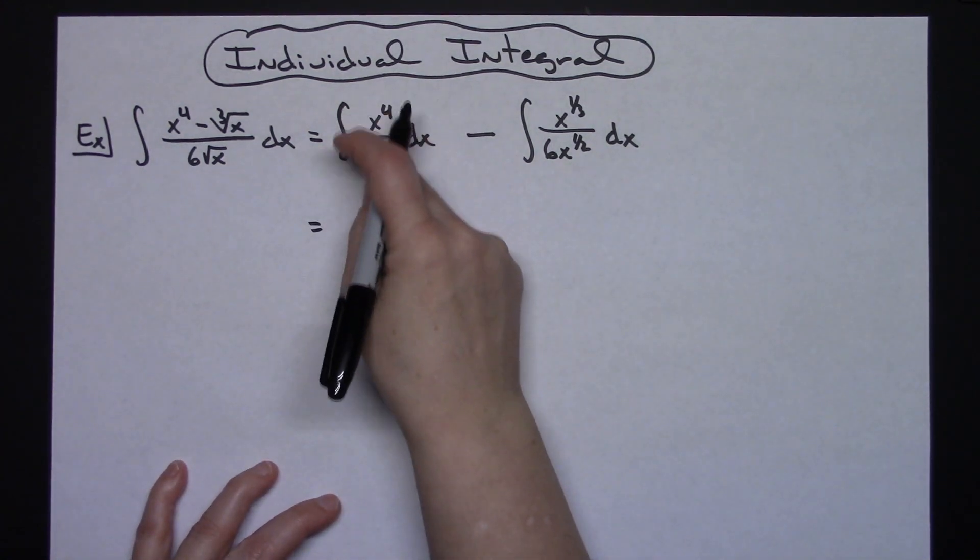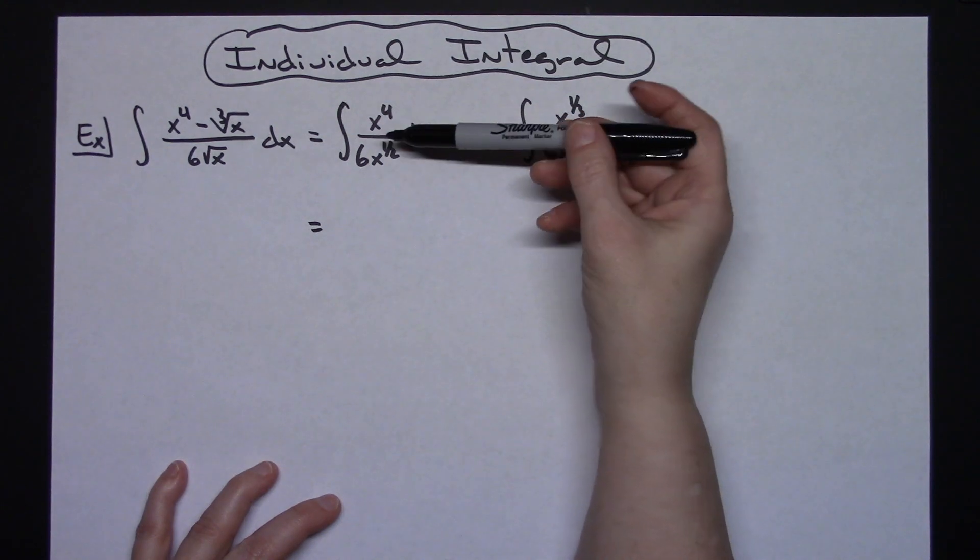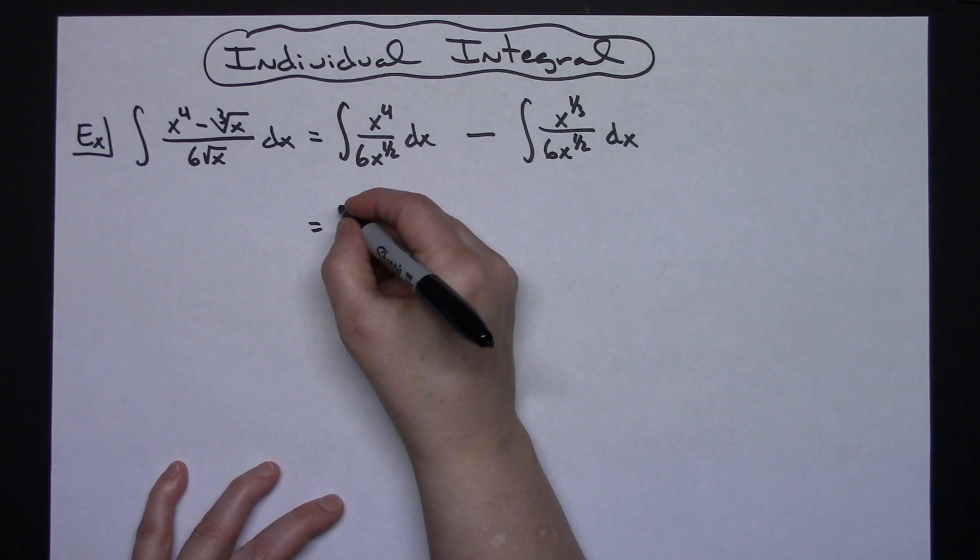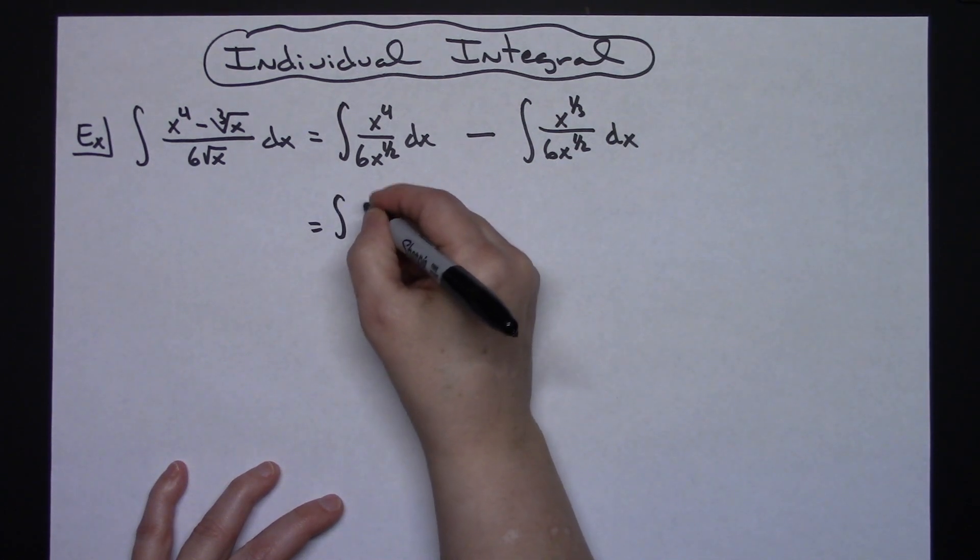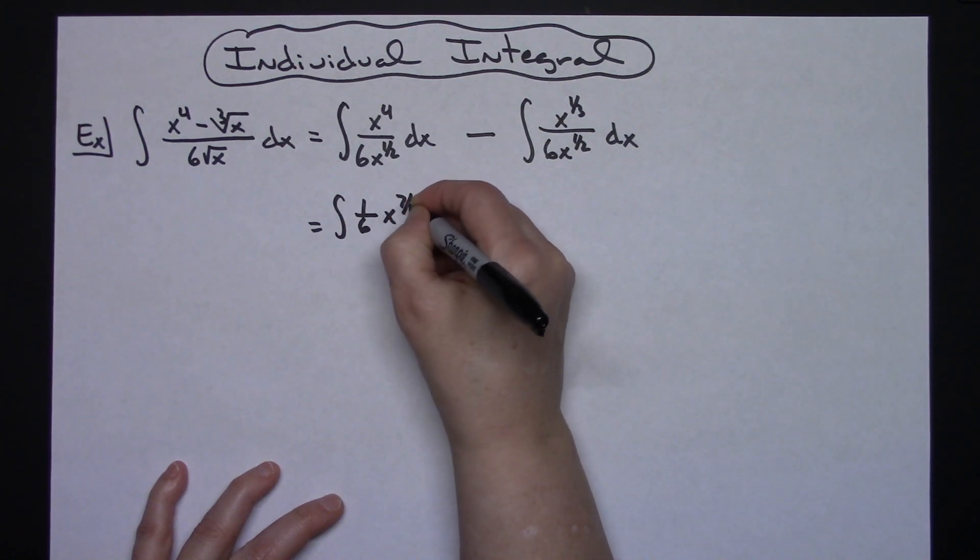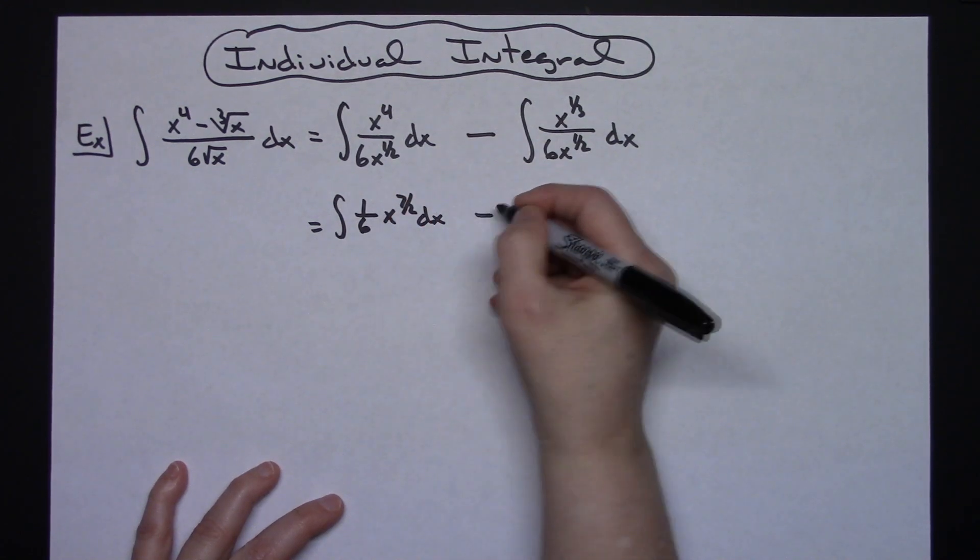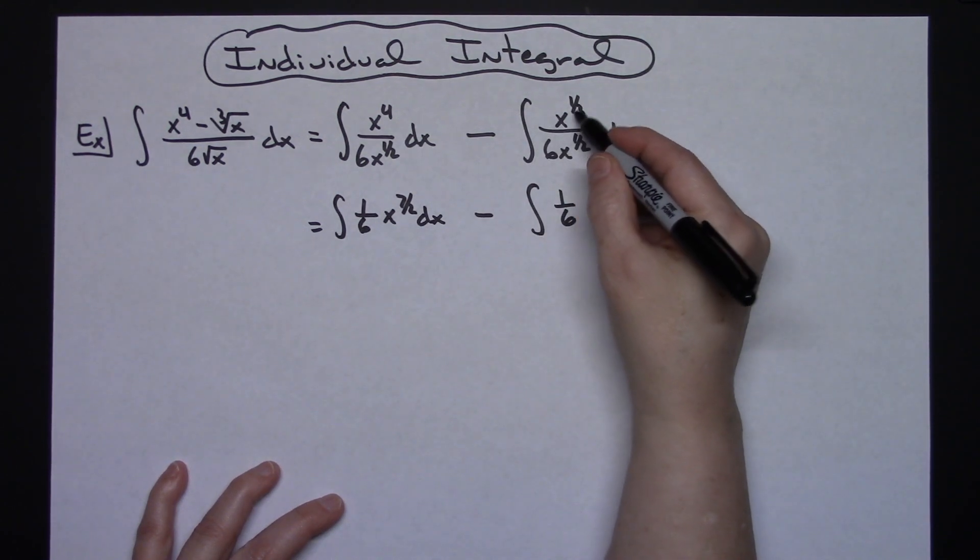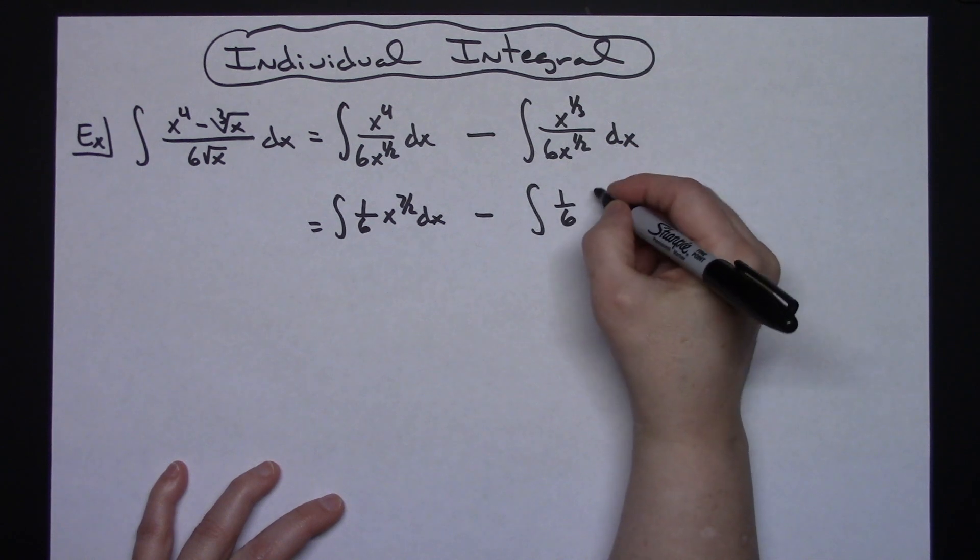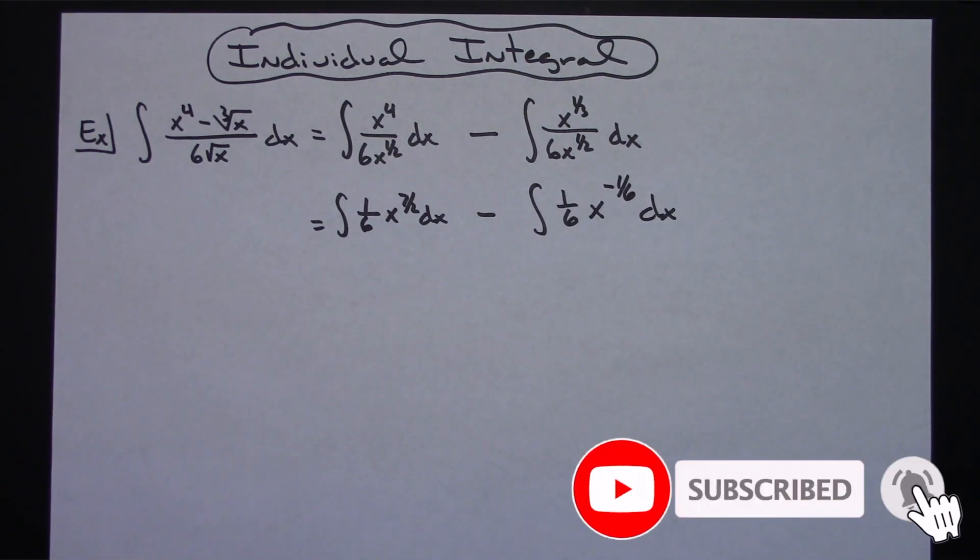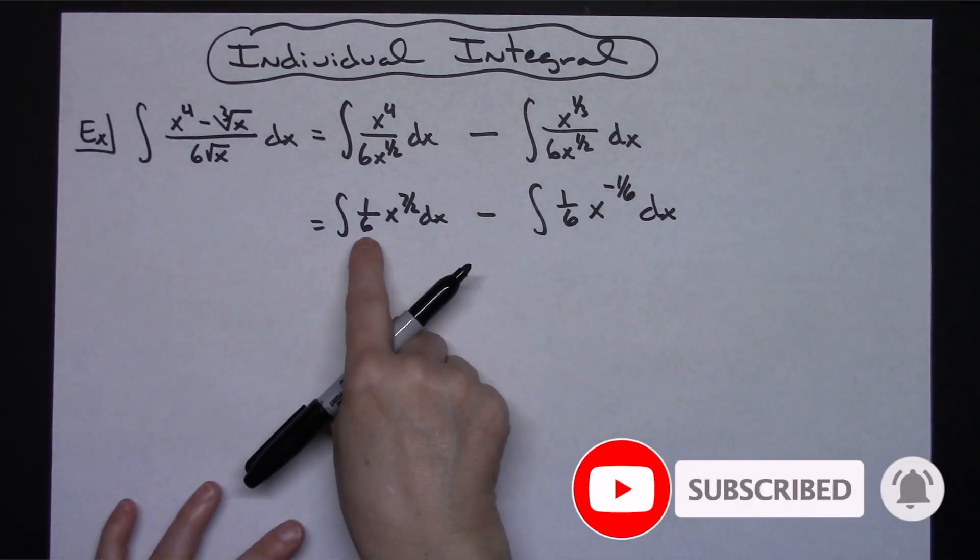Dealing with this first one here, if I apply my laws of exponents, I can subtract four minus a half. I'm going to have the integral of one-sixth x to the seven-halves dx. Same thing over here—one-sixth, and then x to the one-third over x to the one-half is going to end up being x to the negative one-sixth, applying those laws of exponents to simplify.